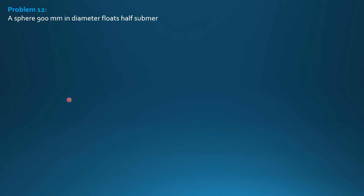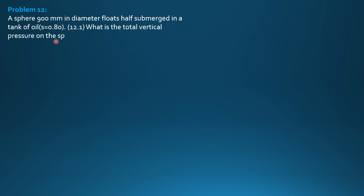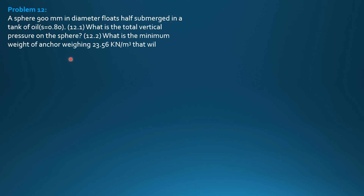A sphere 900 mm diameter floats half submerged in a tank of oil of specific gravity 0.8. What is the total vertical pressure on the sphere? The total vertical pressure is the buoyant force, which is also equal to the weight of the sphere. What is the minimum weight of anchor weighing 23.56 kilonewtons per cubic meter that will be required to submerge the sphere completely?